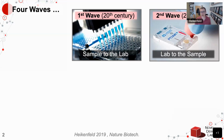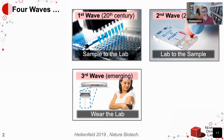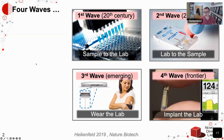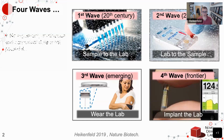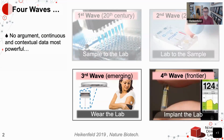As we started to transition from last century to this century, you started to see the second wave, which is bringing the lab to the sample. Now you can get your results instantly: a little finger prick goes into a tiny device with an electronic reader and you get your data instantly. What's been emerging is the third wave where you can actually wear the lab, getting all the information you would get from blood-level information in an ambulatory fashion. Then there's the fourth wave, which is still the frontier: implanting the lab. There's no argument that continuous and contextual data is the most powerful, so we'll focus on the third and fourth waves.